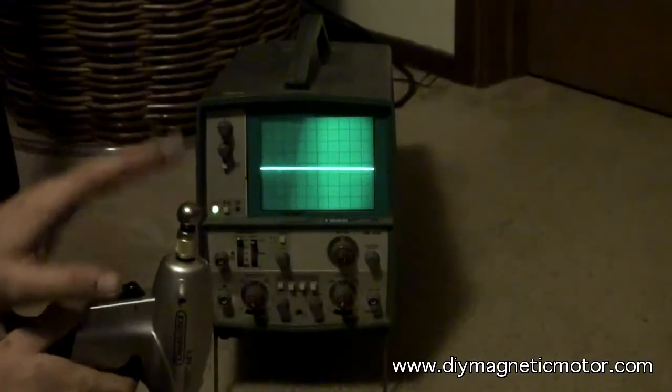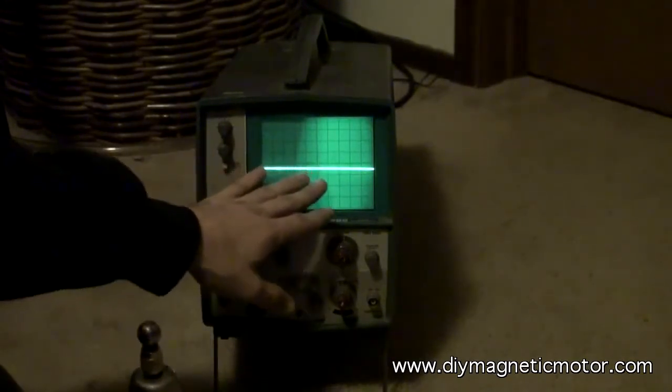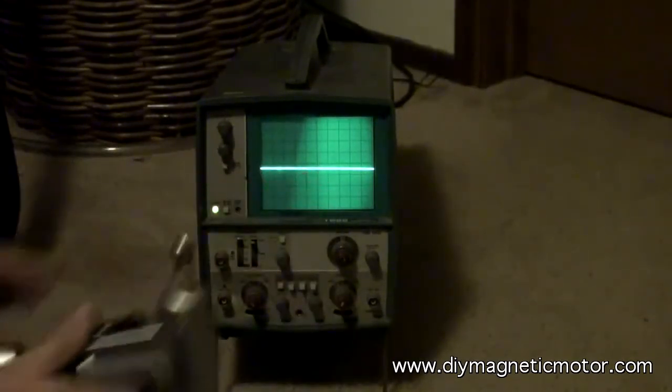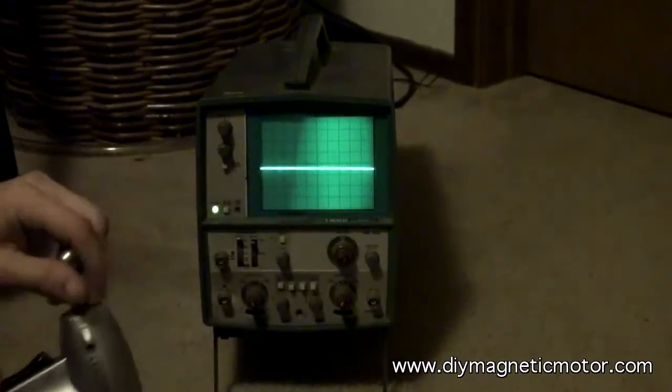But if we magnetized this material, if this was iron, it would have a really small wave. Because this is neodymium, it's registering a much bigger wave, because it's a rare earth material.